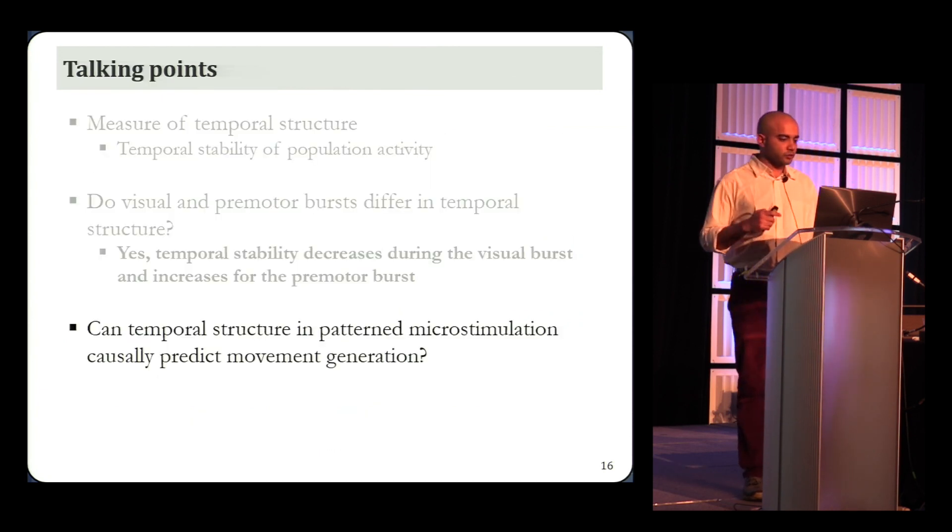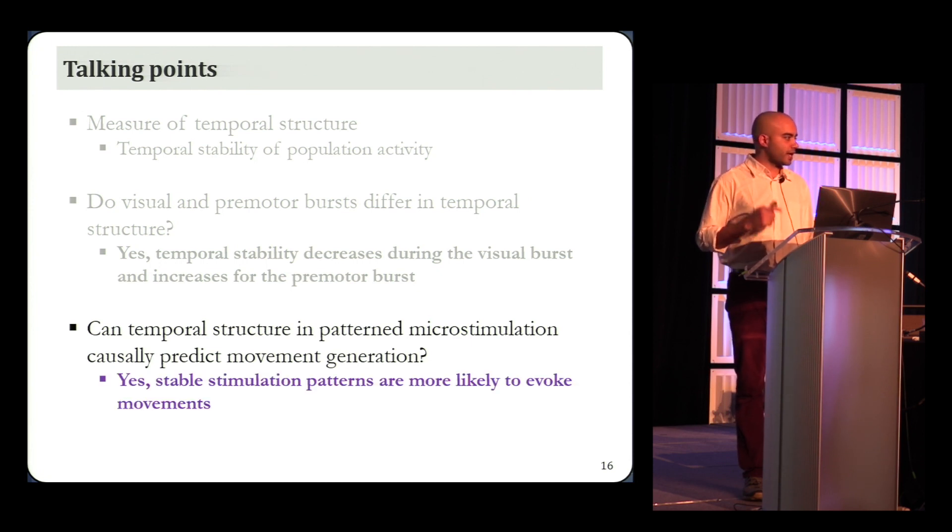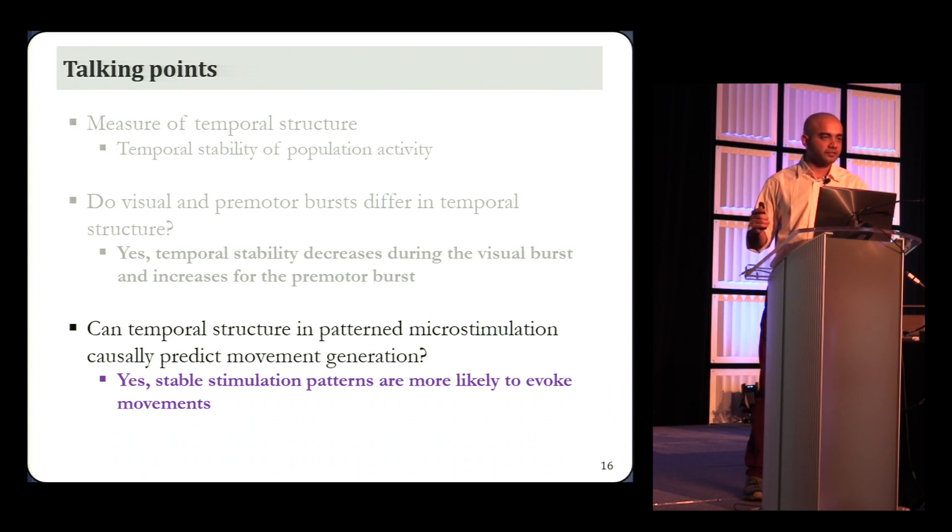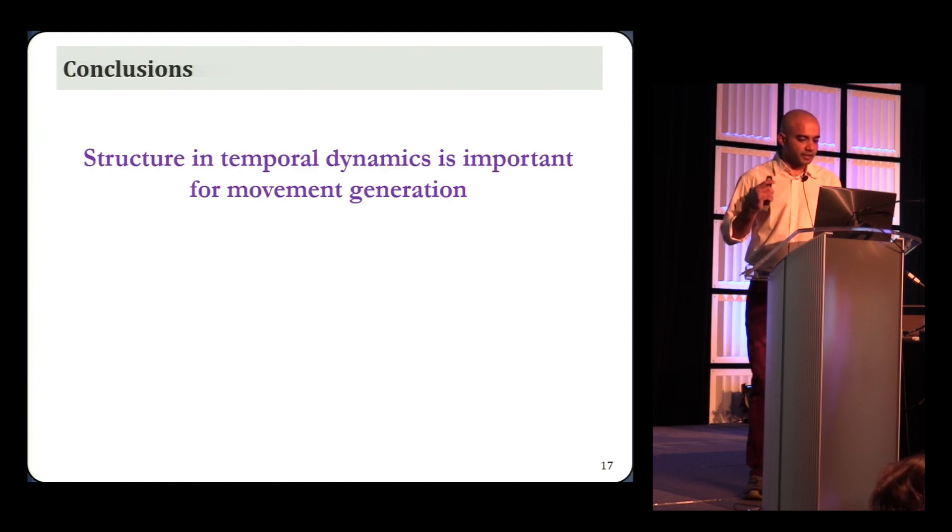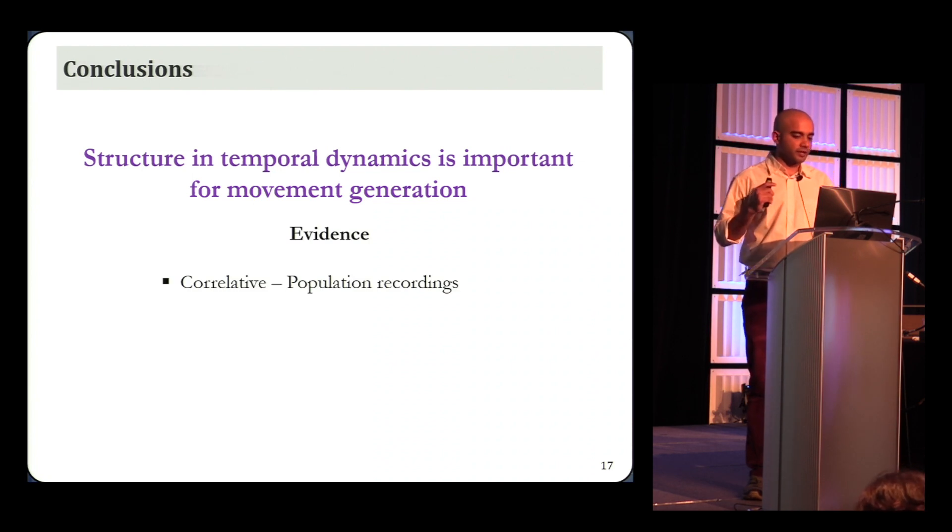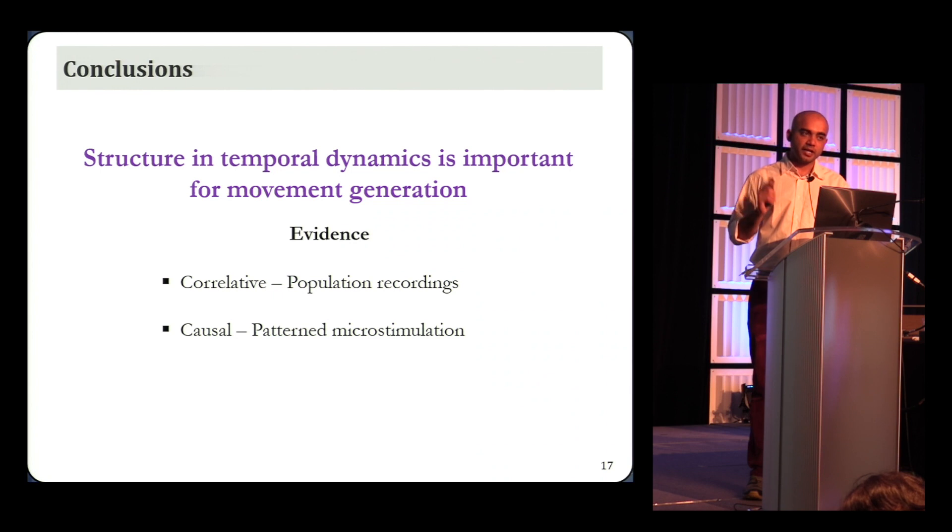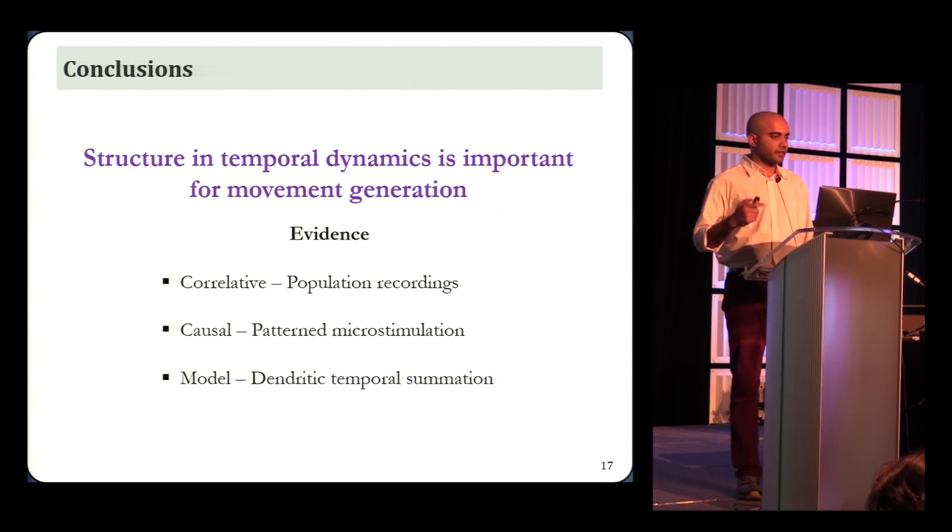Okay, so we then asked whether we can use pattern microstimulation to causally test the temporal stability idea, and the answer is yes. Stable simulation patterns are more likely to evoke movements, and a decoder cannot get at this without looking at the temporal structure. Okay, so let's summarize. Hopefully I've convinced you by now that structure in temporal dynamics, that is stability of the population activity, is important for movement generation. We saw correlative evidence for this in the population recordings. I showed causal evidence in the pattern microstimulation experiments. And finally, I didn't show you this, but it turns out that a simple biophysical model that has dendritic temporal summation can discriminate between stable and unstable input patterns. I'll be happy to talk about this offline for those who are interested. Thank you.